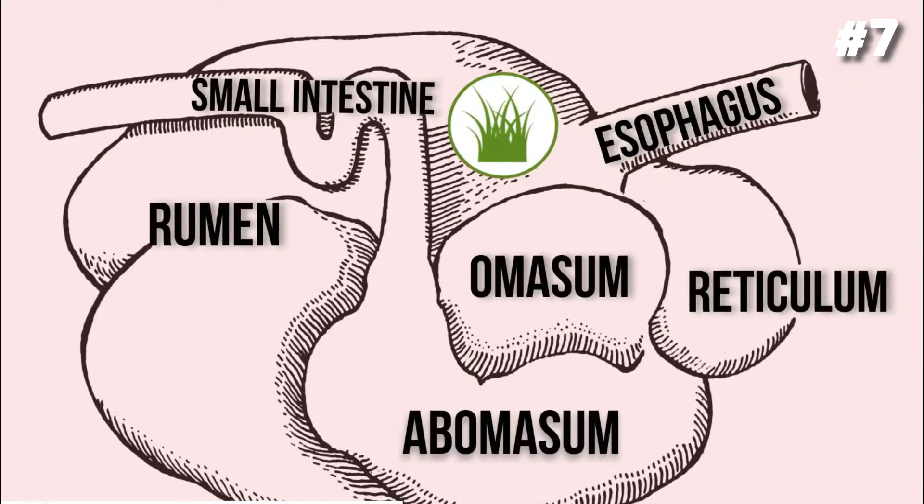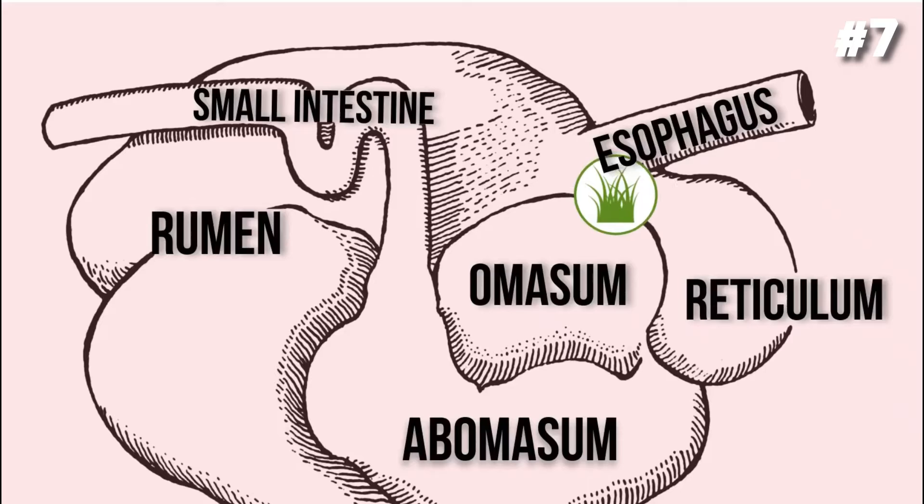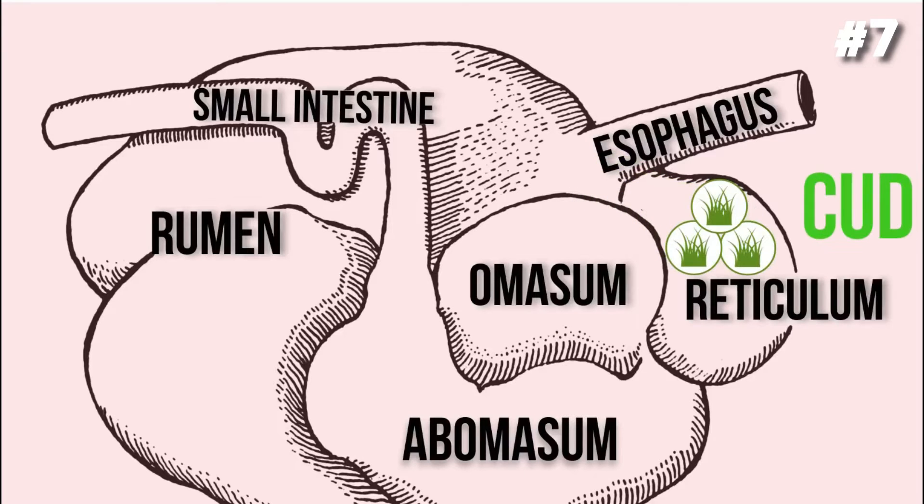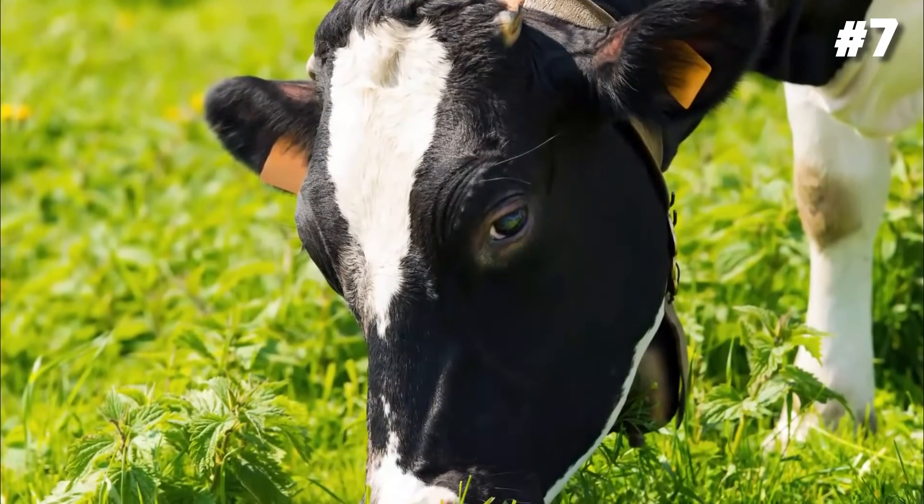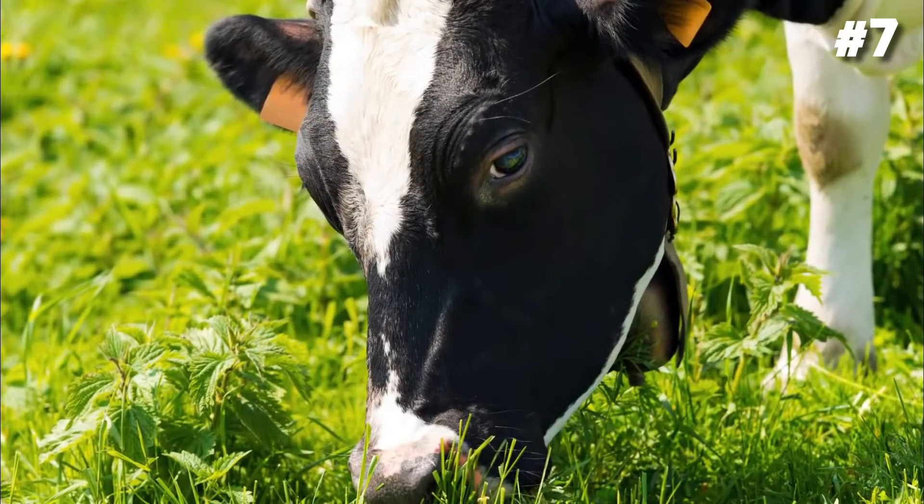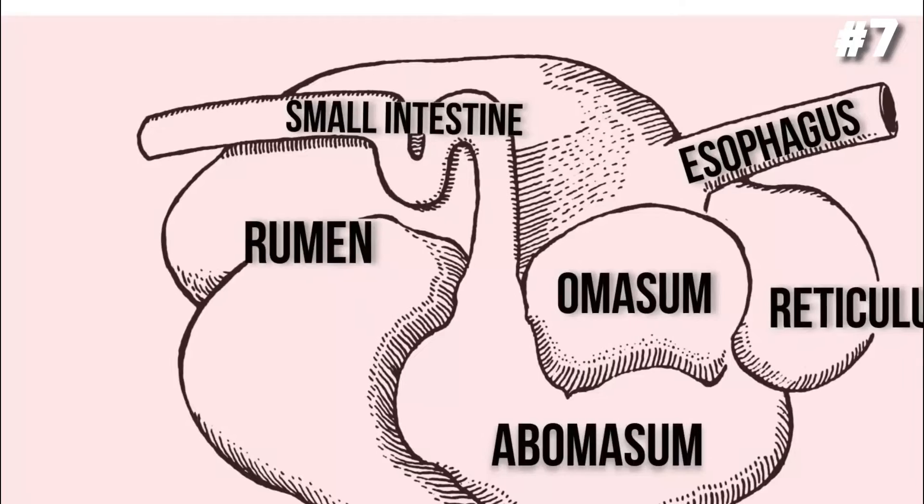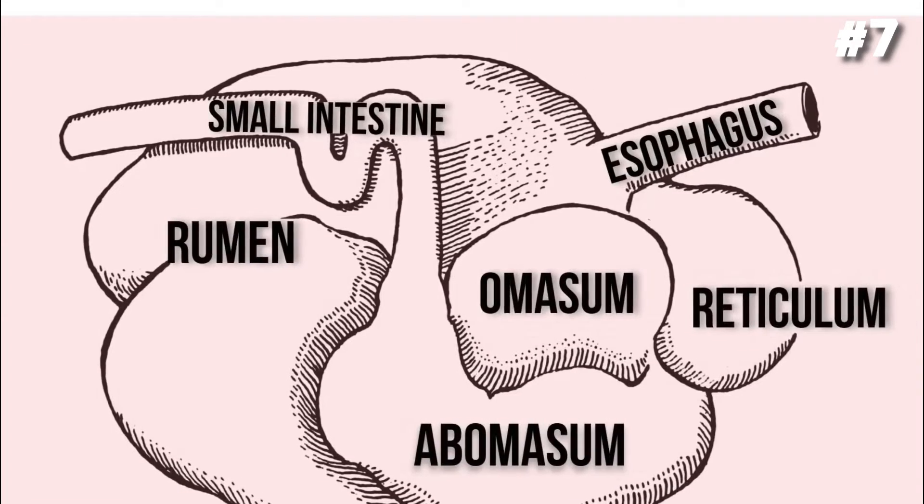The digestive system of cows contains the reticulum and omasum where the grass is formed into cud, unlike humans. These chunks are regurgitated and brought back to the cow so it's ground up more and further breaks down. This is again swallowed by cows and brought back to the stomach. Moreover, humans don't possess tiny microbes and some enzymes inside their digestive systems to break down grass, unlike cows.